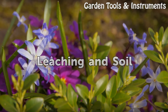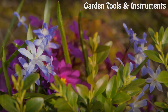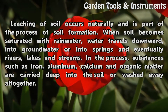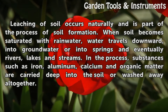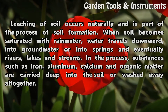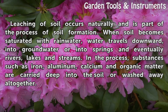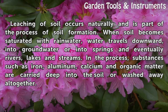Leaching of soil occurs naturally and is part of the process of soil formation. When soil becomes saturated with rainwater, water travels downward into groundwater or into springs and eventually rivers, lakes and streams. In the process, substances such as iron, aluminum, calcium and organic matter are carried deep into the soil or washed away altogether.